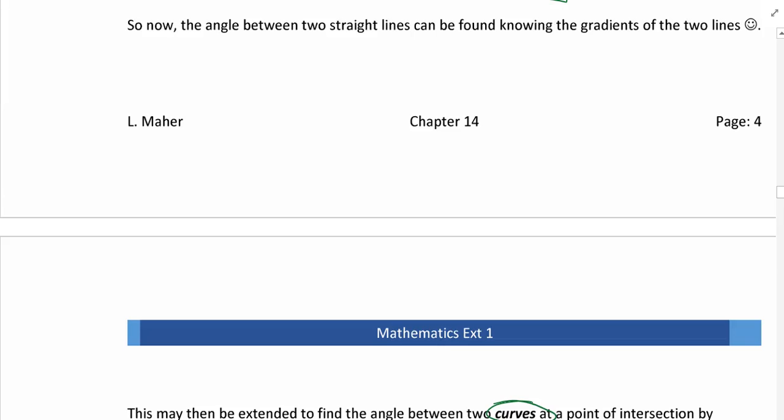Okay, so after all that, the most important thing that hopefully you've got from that is to find the angle between two straight lines, you need to know the gradients. It's based on the gradients of the two lines, and we'll see the slight variation to that when we're finding an angle between two curves as opposed to two straight lines.